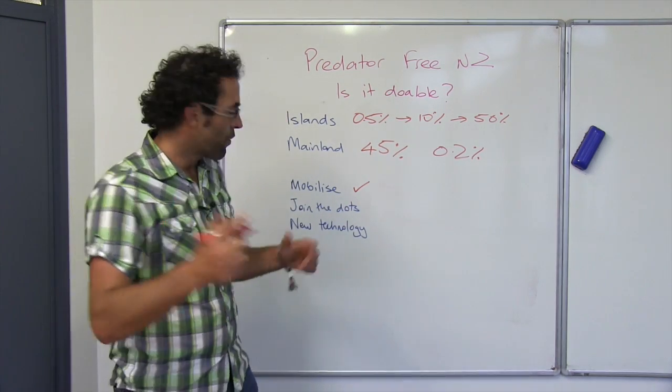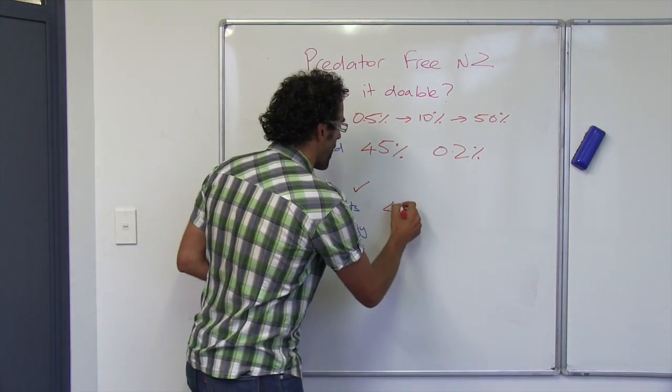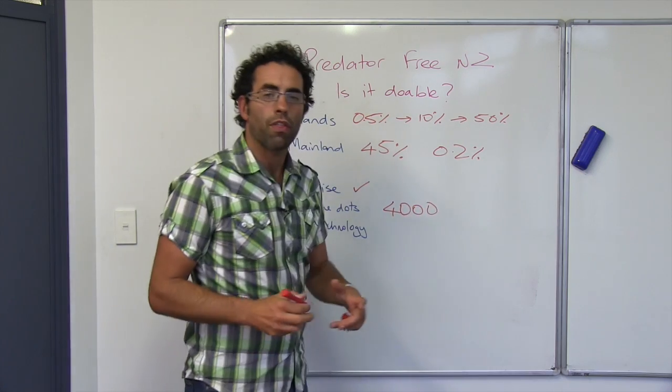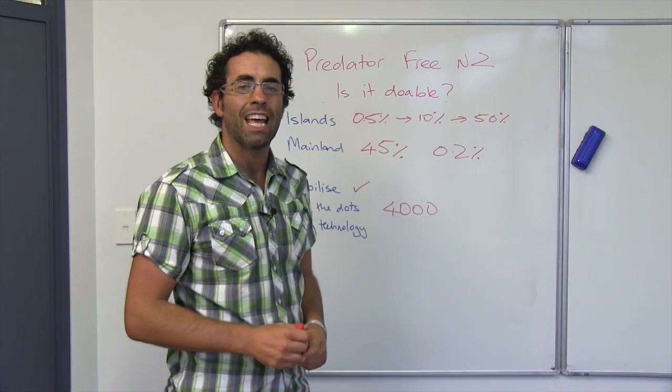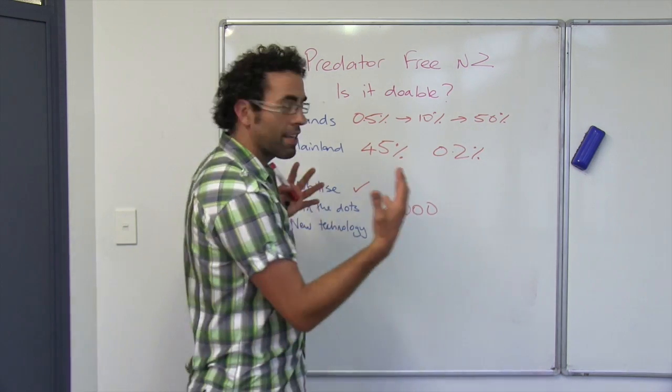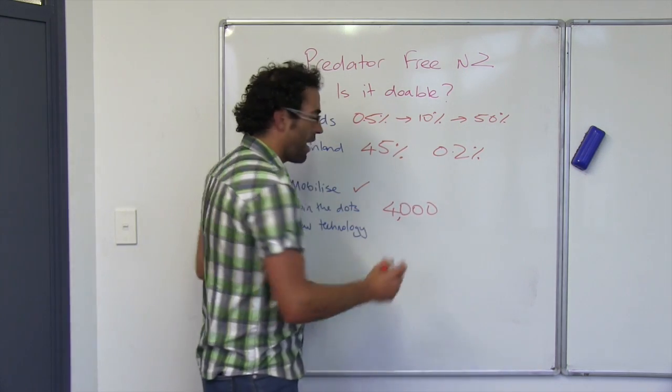Secondly, joining the dots. Incredibly, there's around about 4,000 conservation projects out there in New Zealand right now. For a population of 4.2 million, that's pretty impressive. So we need to get these groups working together and joining up.